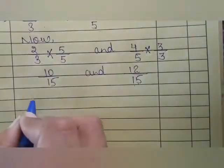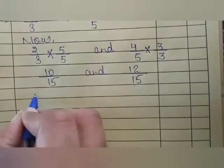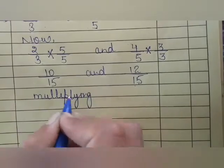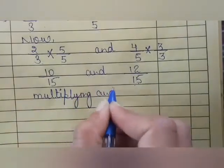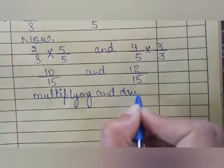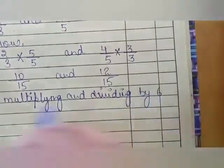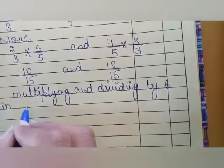Let's do it. We will write down here, multiplying and dividing by 6 in both the numbers.